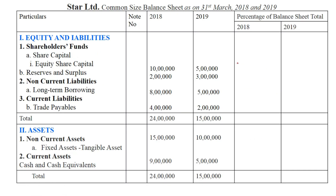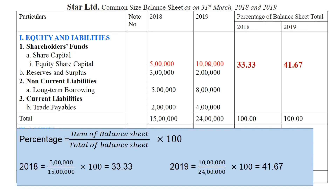Let's prepare the common size statement. You have to add only two columns and calculate the percentage of each element of the balance sheet. The first one is the equity shares. We have equity shares of 5 lakh. We compare the elements of the balance sheet with the same year as a base year. What is your total? 15 lakh. So that will become your base. The element is 5 lakh. So what percentage do we get? 33 percent.